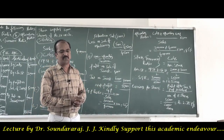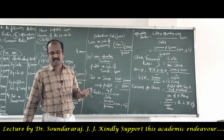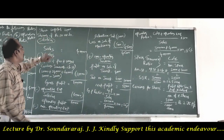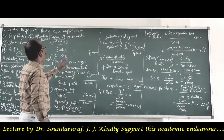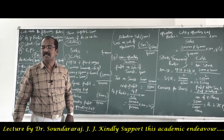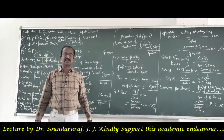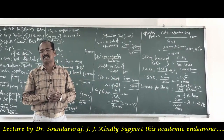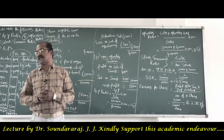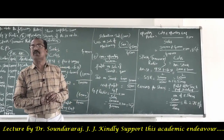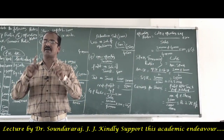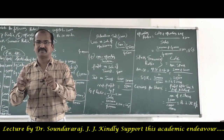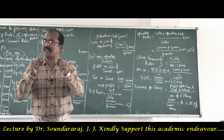We take the net profit of 55,000 as it is, because there are no further adjustments needed for tax or preference dividend in this problem. This is divided by the number of equity shares: the share capital is 20,000 equity shares of 10 rupees each, so the number of equity shares is 20,000. So 55,000 divided by 20,000 gives 2.75 rupees. Every equity share of this company earns 2.75 rupees profit — that is earning per equity share.